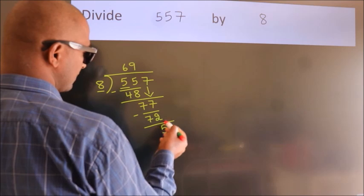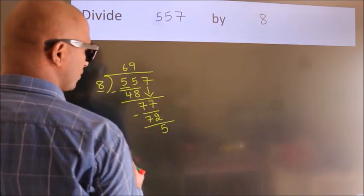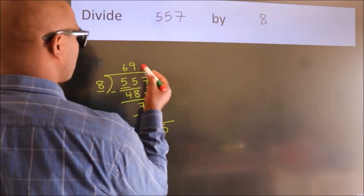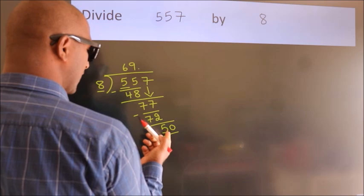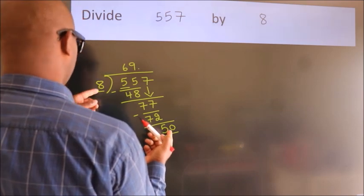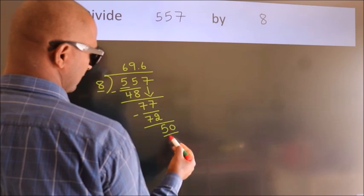After this, no more numbers to bring down. So what we do is, we put a dot and take 0. So 50. A number close to 50 in the 8 table is 8 times 6 equals 48.